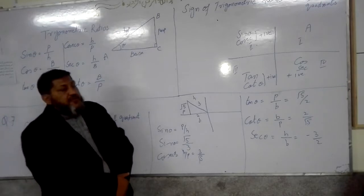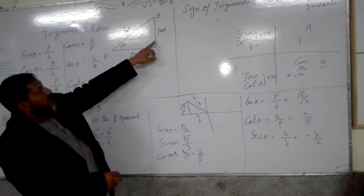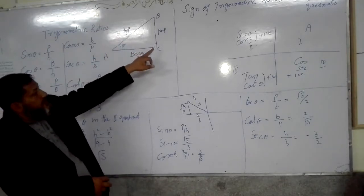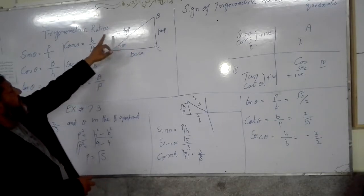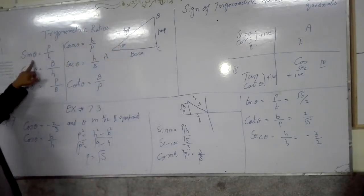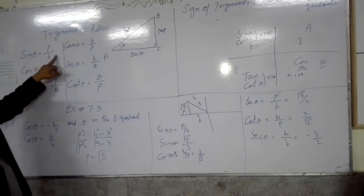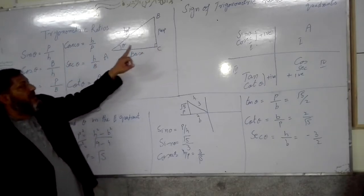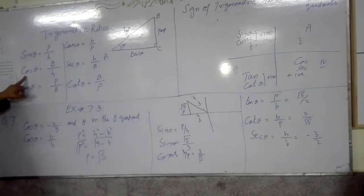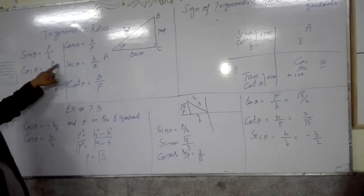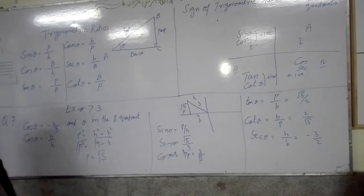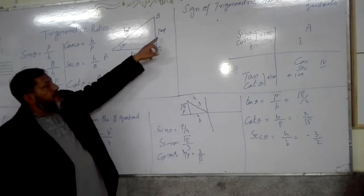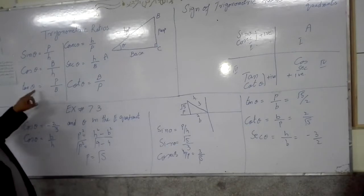The ratio between perpendicular and hypotenuse is called sin theta: sin θ = perpendicular / hypotenuse. The ratio between base and hypotenuse is called cos theta: cos θ = base / hypotenuse. The ratio between perpendicular and base is called tan theta: tan θ = perpendicular / base.